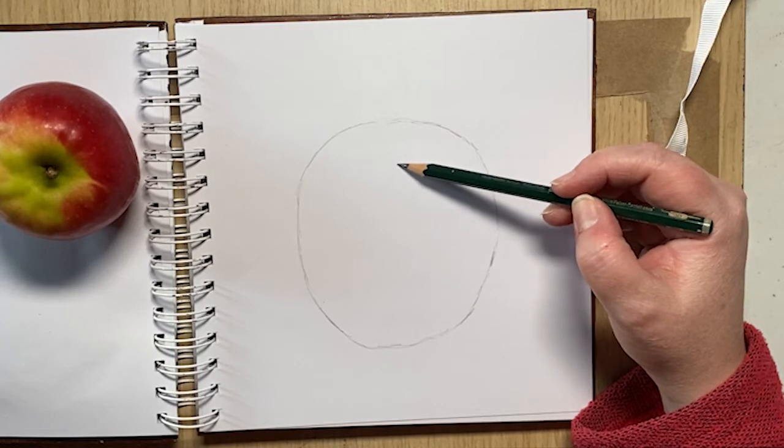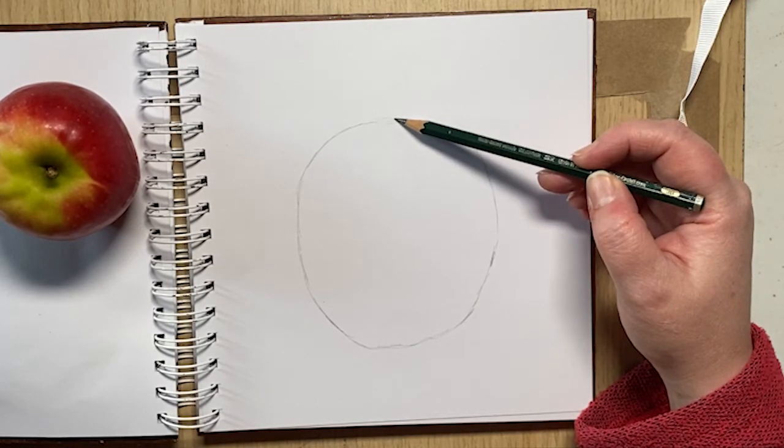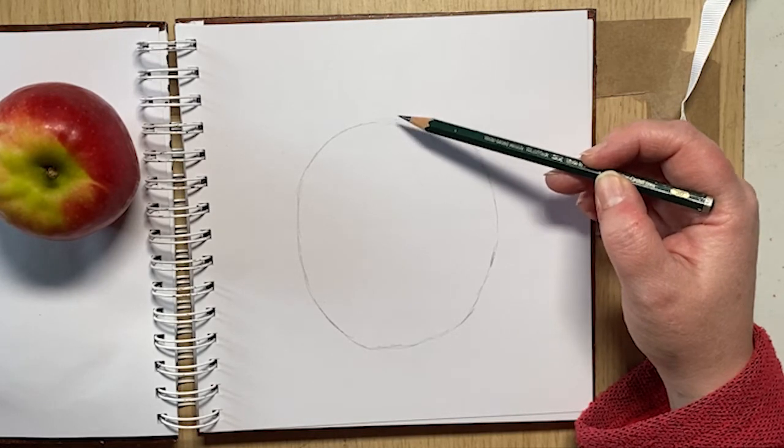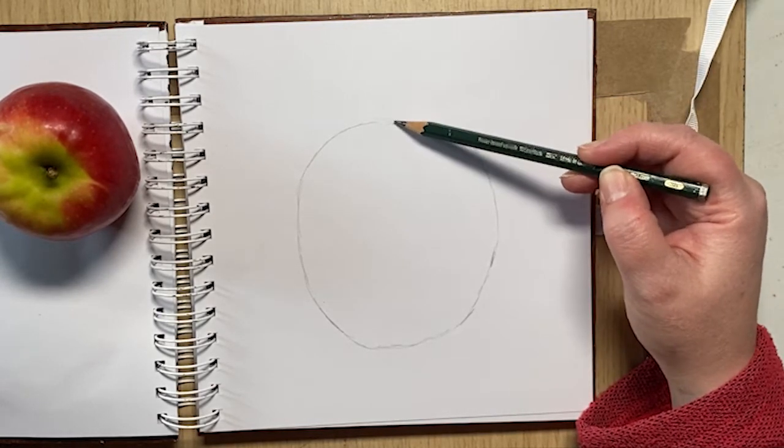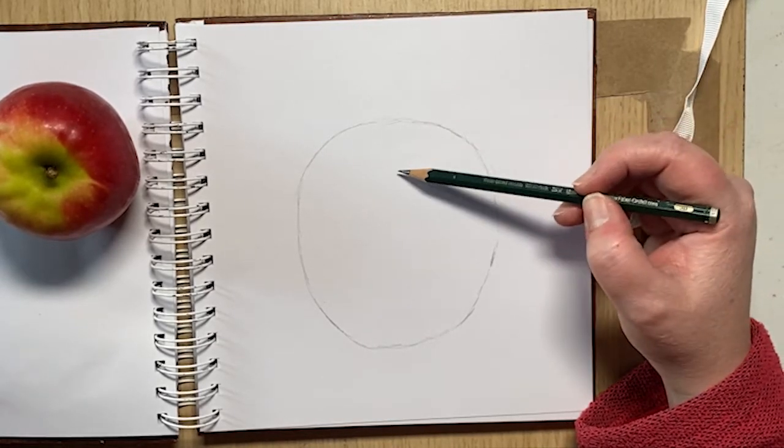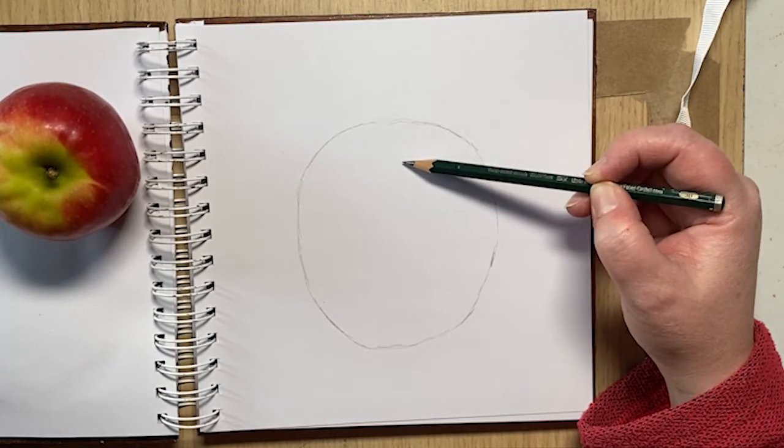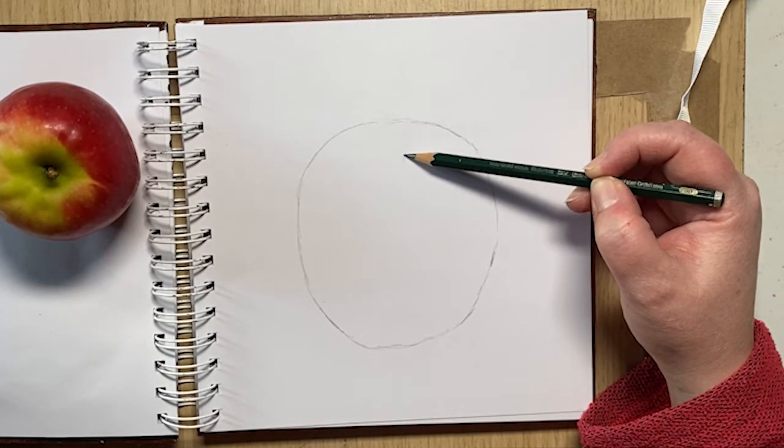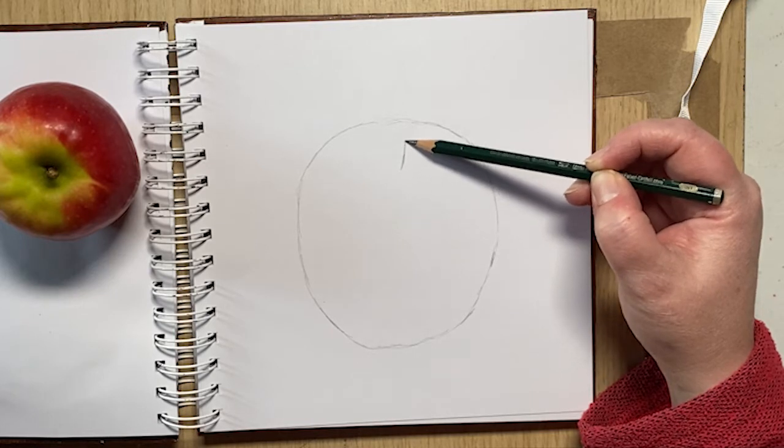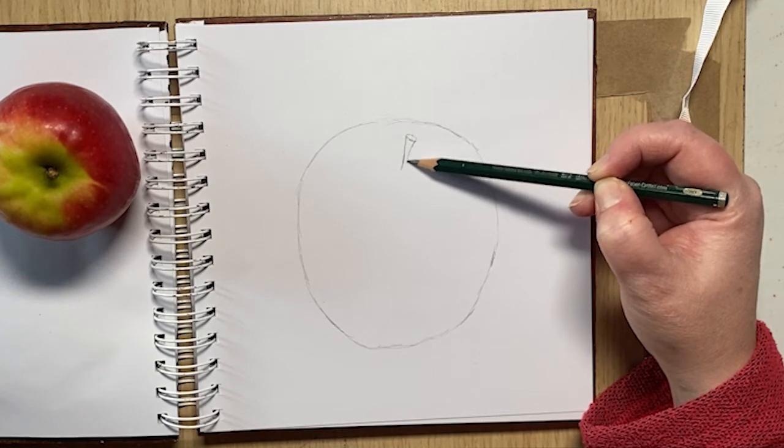Now I'm looking at the stalk. The temptation, if you're just drawing without even observing something, is to put the stalk up here, which obviously is not quite right. So in this apple, the stalk is actually in about here. I'll just put a little stalk there.